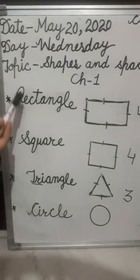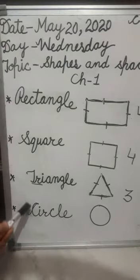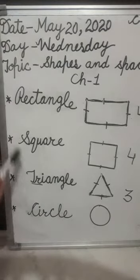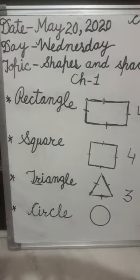Look at the board. These are shapes — these are flat shapes. We can say it plain shape also — हम इनको plain shape भी कह सकते हैं.